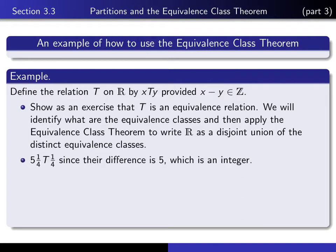So let's just play around with some of the elements of R and see which elements seem to be related to each other. Why is it the case that 5 and a quarter is related to one quarter? We need to take the difference and see if it comes out to be an integer. So 5 and a quarter minus a quarter is 5. That's an integer, and therefore these two numbers are related. In fact, any two integers are related to each other, because when you subtract two integers, you get another integer.